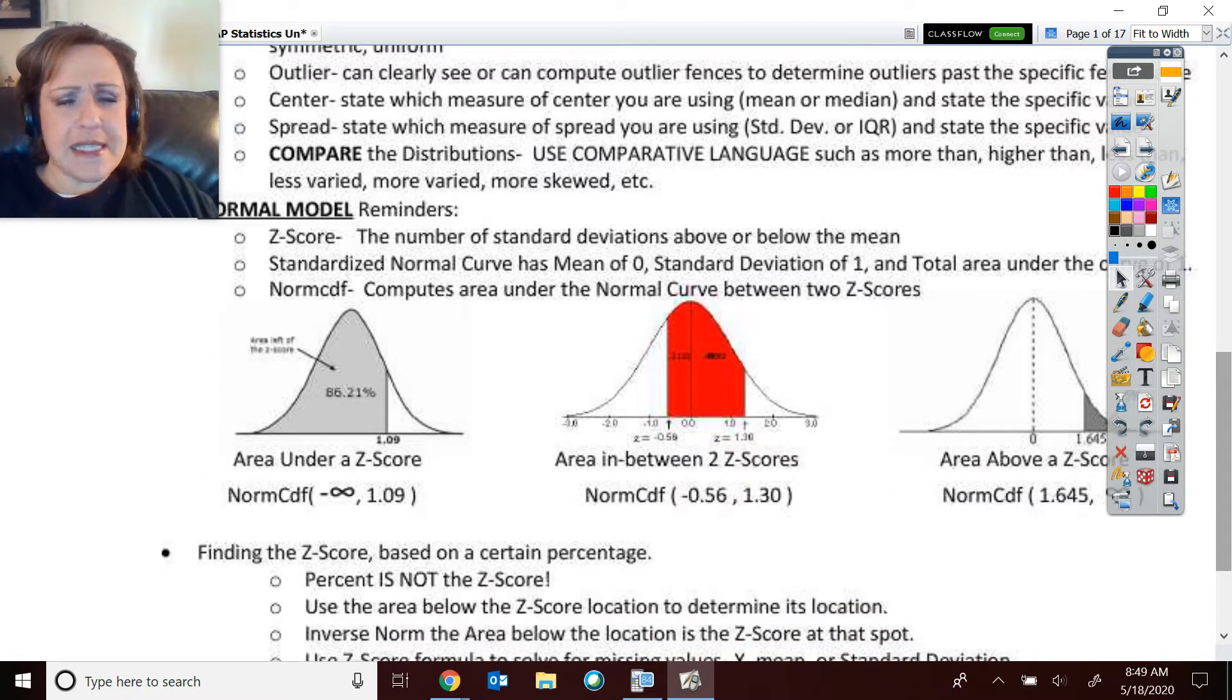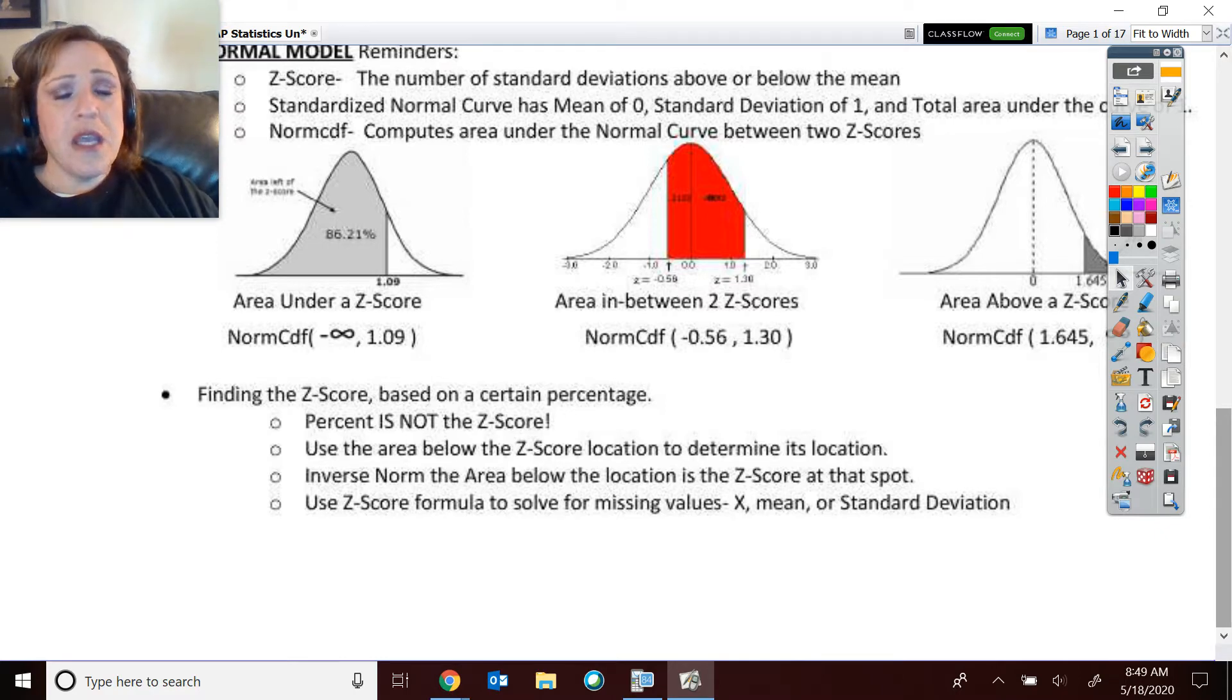Here was just some basic normal model stuff. Sometimes you guys ask me about the negatives, infinities, and positive infinities. So I have some pictures of lower, in the middle, and upper areas, and how you norm CDF those. Remember if they ask you for a z-score, they say what's in the 90th percentile? Percent is not the Z. 90th percentile does not mean your z-score is 0.9. Percent is not the Z. Use area below to calculate that z-score. It's inverse norm of the area below.